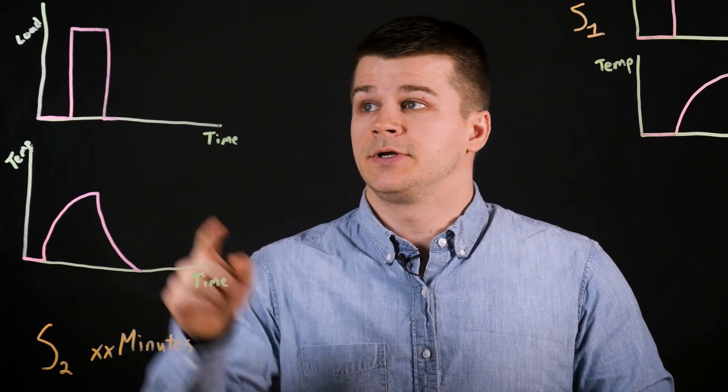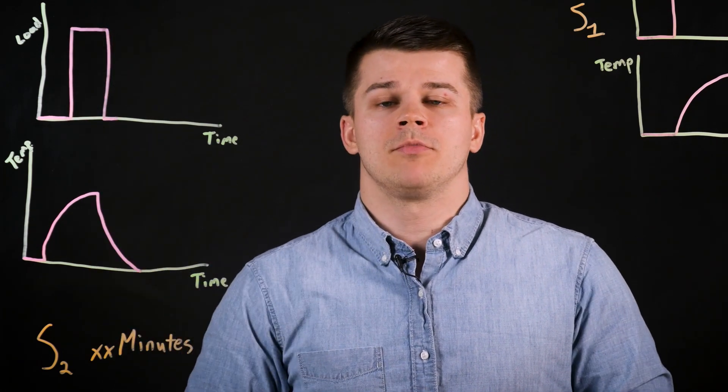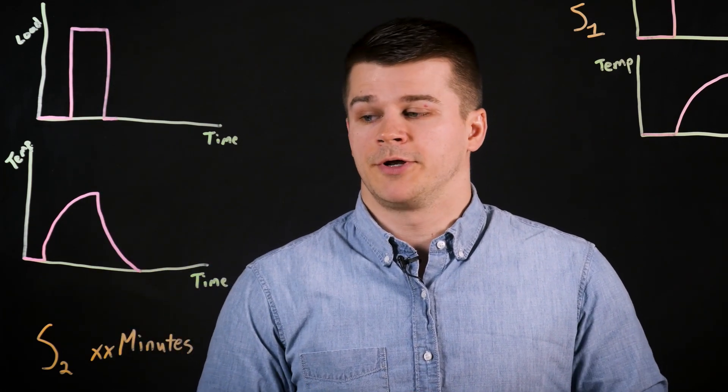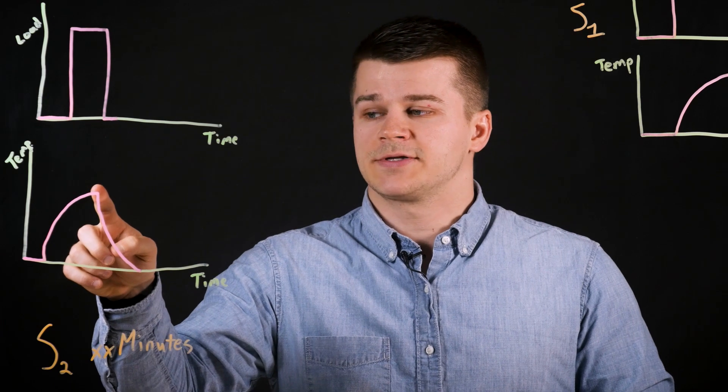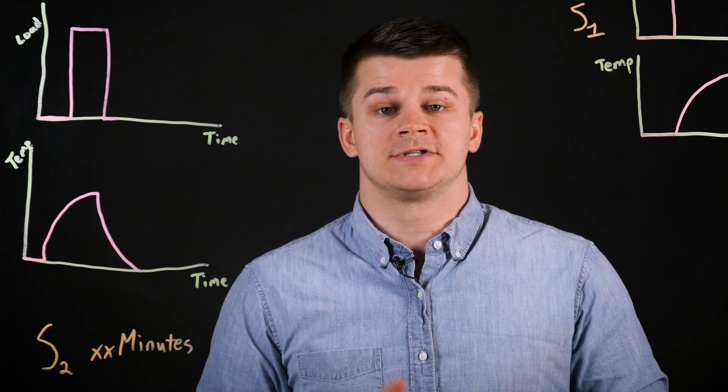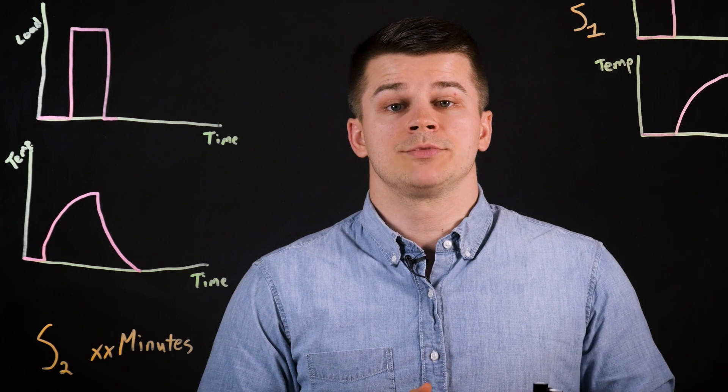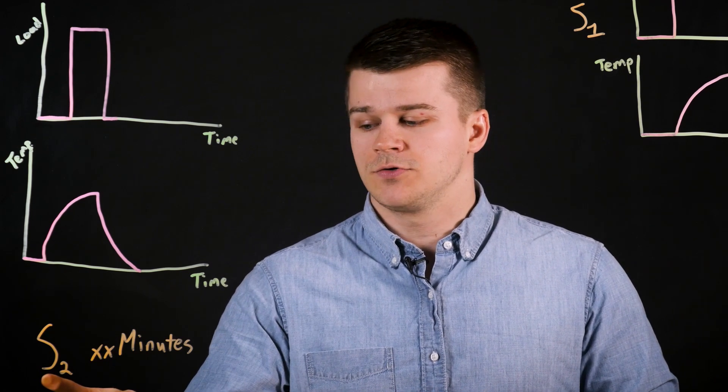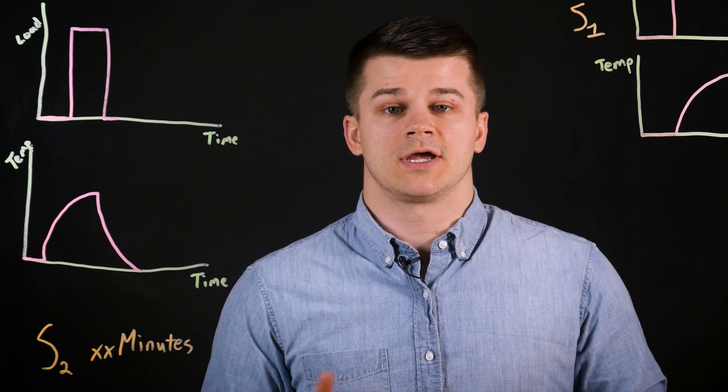Unlike continuous duty, the load is removed before the motor is allowed to reach its thermal equilibrium. At this point, the motor rests and is allowed to cool down until it reaches the ambient temperature of the environment. The short-term duty cycle is abbreviated as S2 followed by the number of minutes in the cycle.